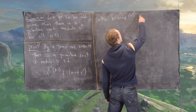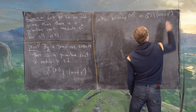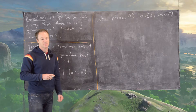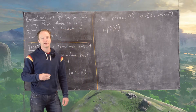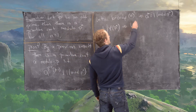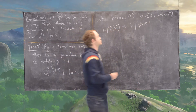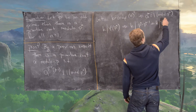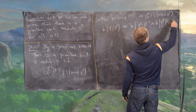Notice that a to the k is congruent to 1 mod p^n, but the order of everything mod p^n must divide phi of p^n. So k divides phi of p^n. Using the formula for Euler's phi function on prime powers, that tells us k divides p^(n-1) times (p-1).